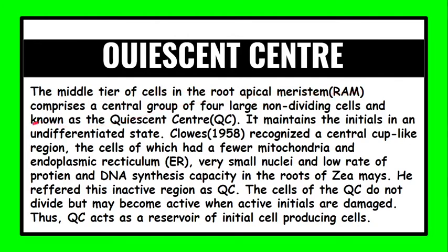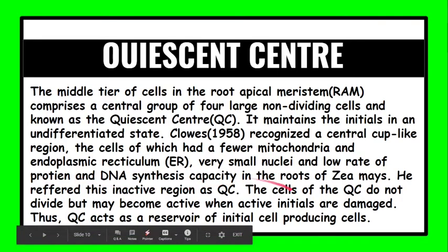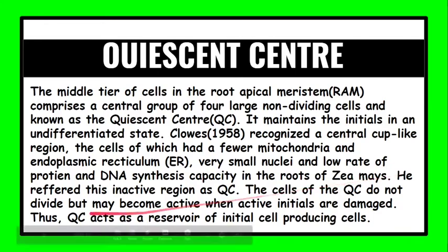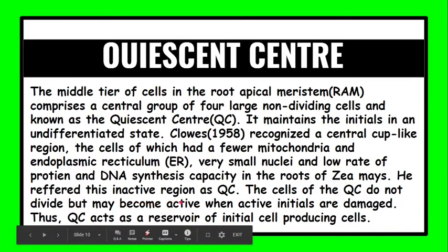Now there is a small topic which is very important: quiescent center. Quiescent center lies in the middle of root apical meristem and it comprises a central group of four large non-dividing cells. It maintains the initials in an undifferentiated state. Clowes in 1958 recognized a central cup-like area, the cells of which had fewer mitochondria and endoplasmic reticulum.